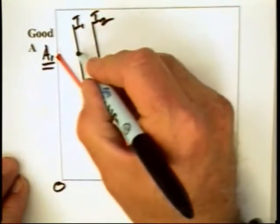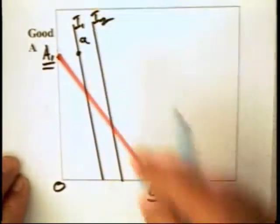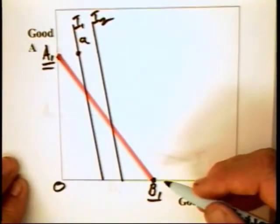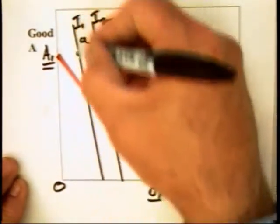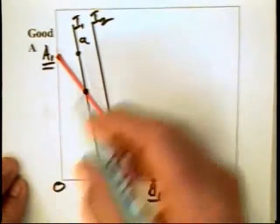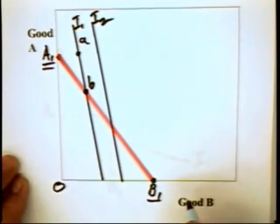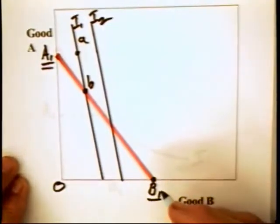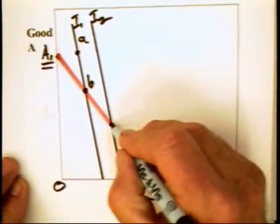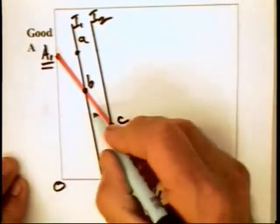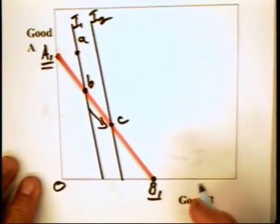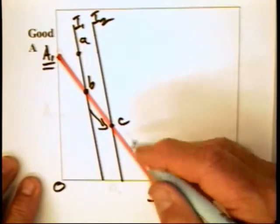We know that the individual cannot choose combination A because that is outside of what his budget will allow. The individual with this indifference curve can only buy on this red line or combination like B.